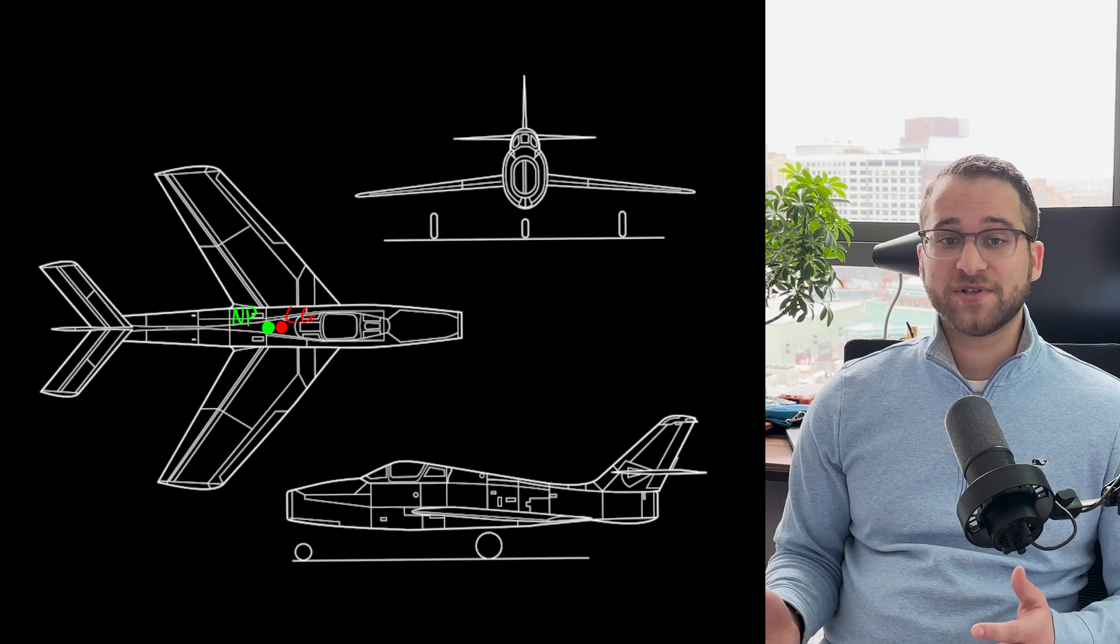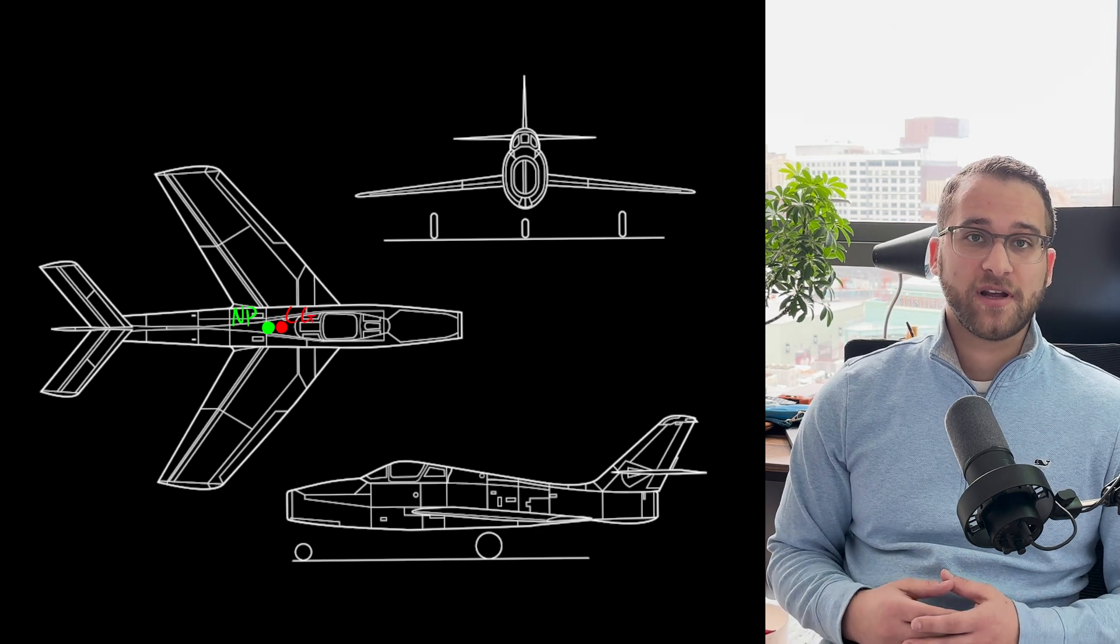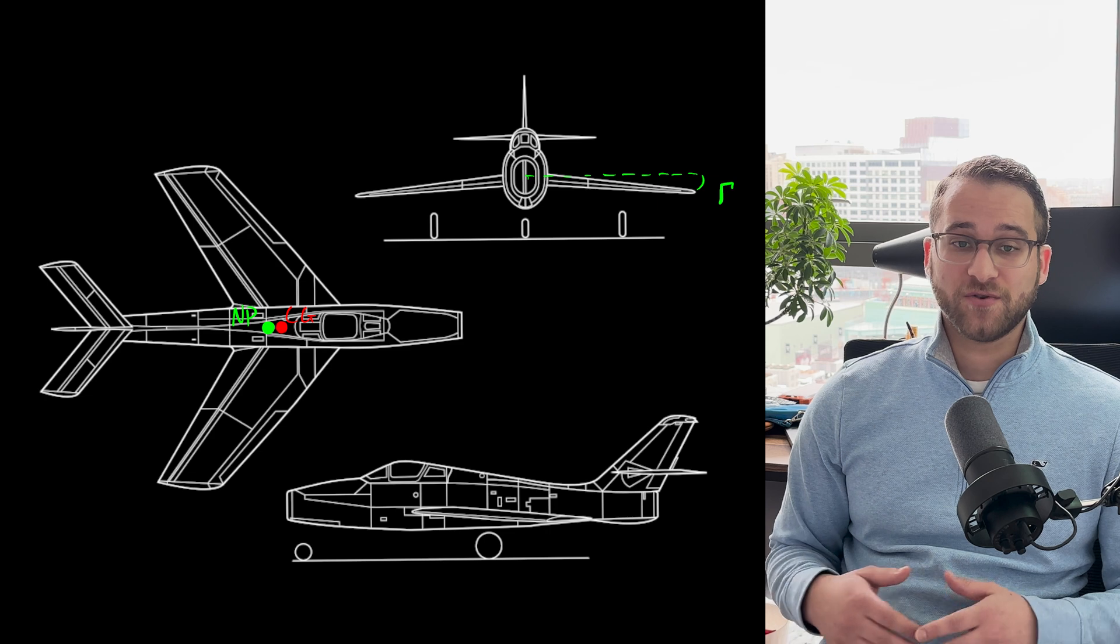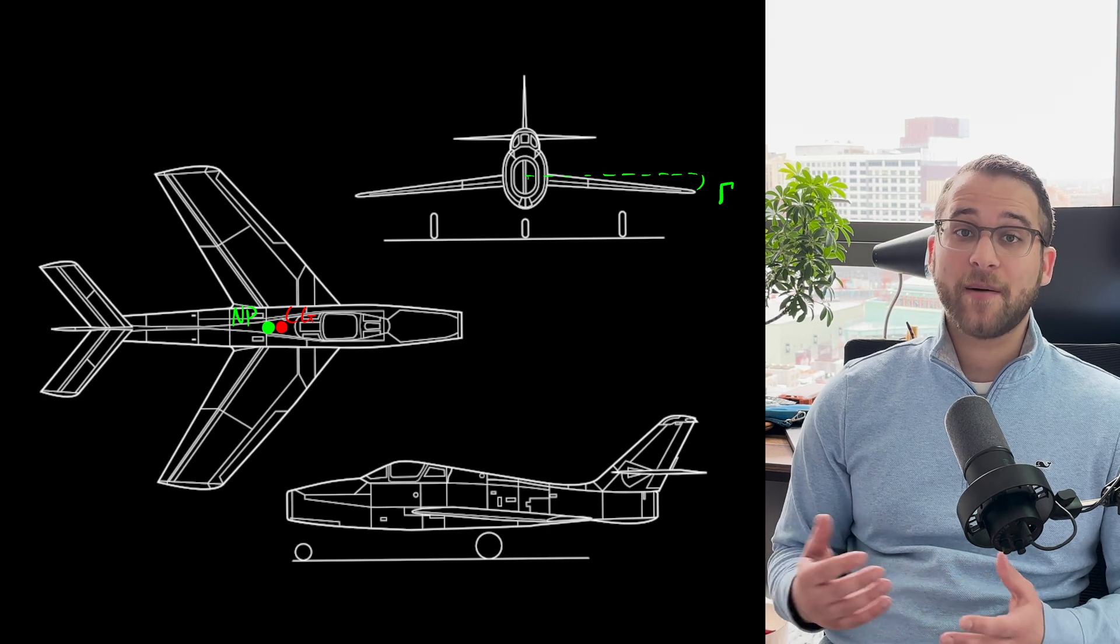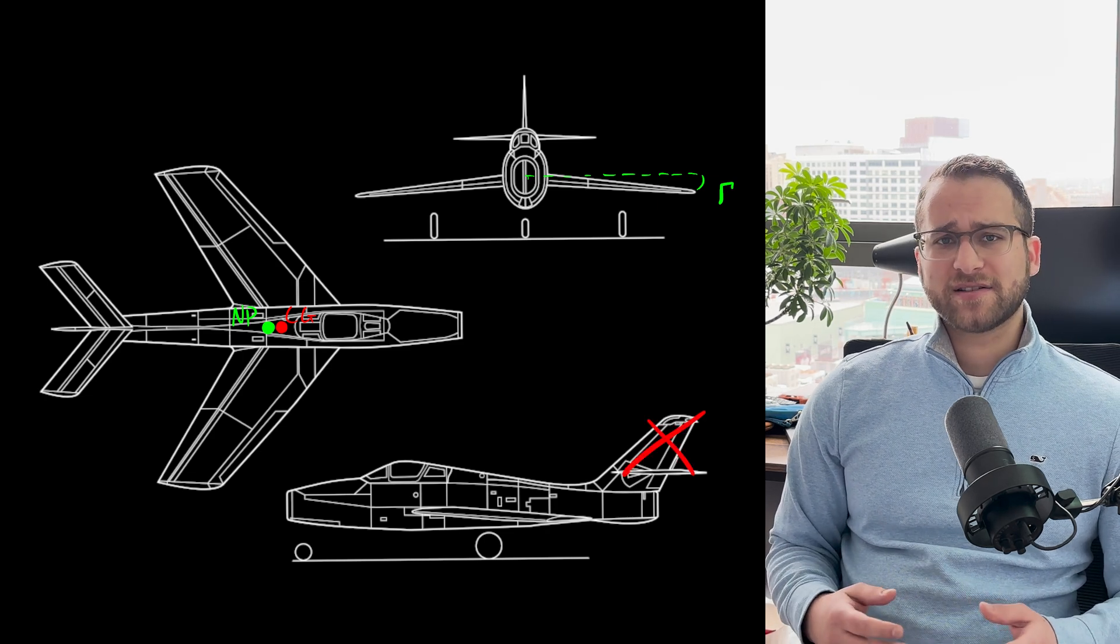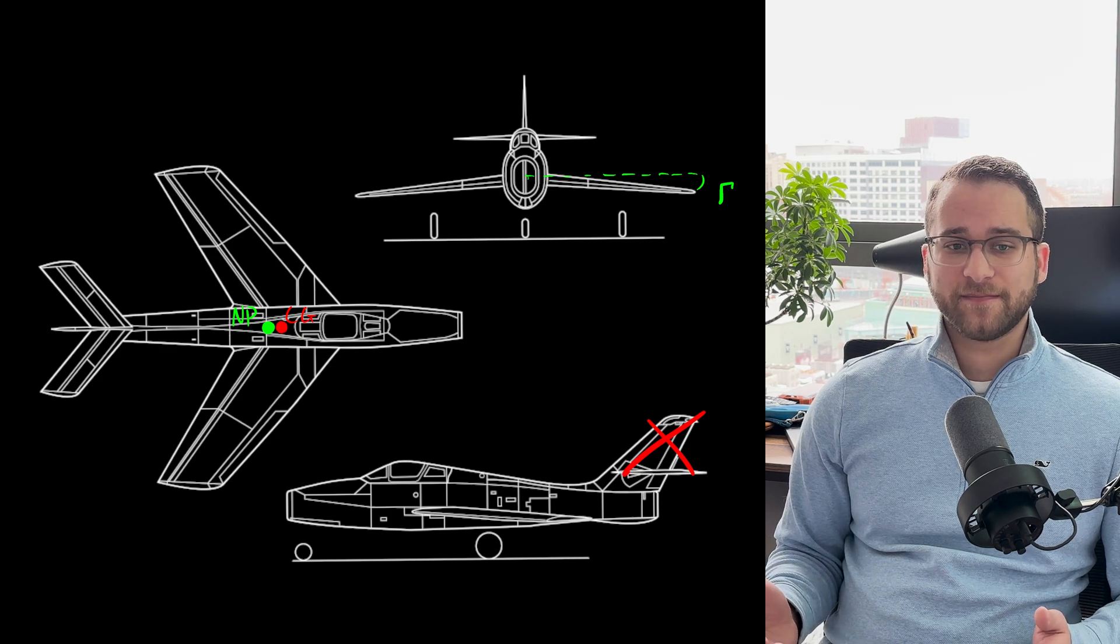This is why fighter jets often incorporate features that reduce stability. Their center of gravity is positioned very close to the neutral point. Sometimes they incorporate anhedral, or downward-angled wings, the opposite of dihedral. And sometimes they have small or no vertical stabilizer. These design choices make the aircraft more responsive, but also more challenging to fly.